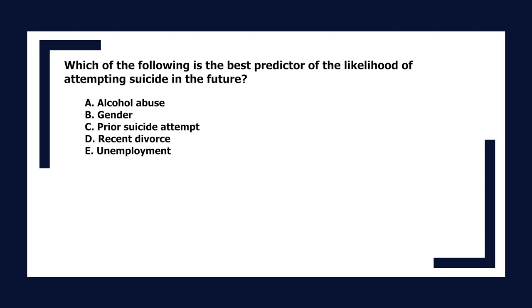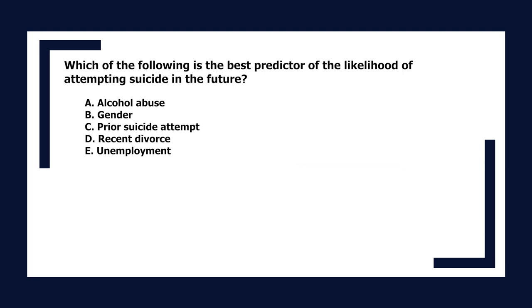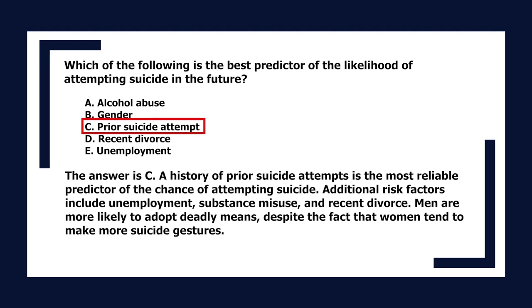Which is the best predictor of the likelihood of attempting suicide in the future? A. Alcohol abuse, B. Gender, C. Prior suicide attempt, D. Recent divorce, E. Unemployment. The answer is C. A history of prior suicide attempts is the most reliable predictor. Additional risk factors include unemployment, substance misuse, and recent divorce. Men are more likely to adopt deadly means, despite the fact that women tend to make more suicide gestures.